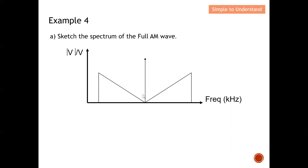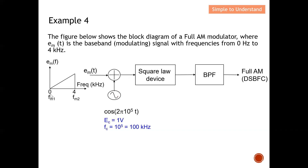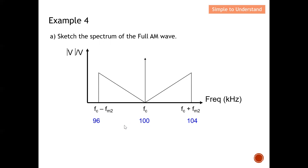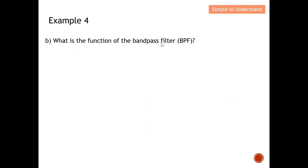Firstly, sketch the spectrum of the full AM wave. The carrier is at 100 kHz. The modulating signal spans 0 to 4 kHz, so I copy it around the carrier and mirror it on the other side. The upper sideband extends from fc to fc plus 4 kHz, which is 100 to 104 kHz, and the lower sideband extends from fc minus 4 kHz to fc, which is 96 to 100 kHz.